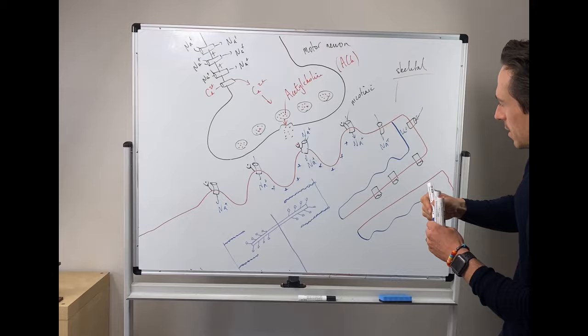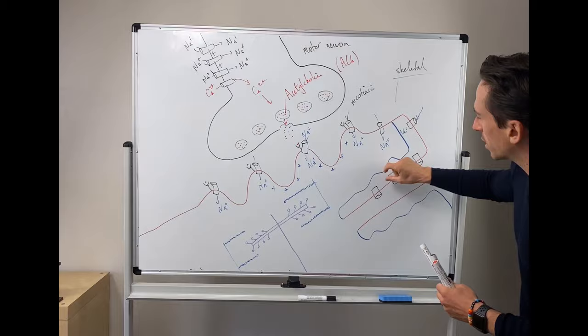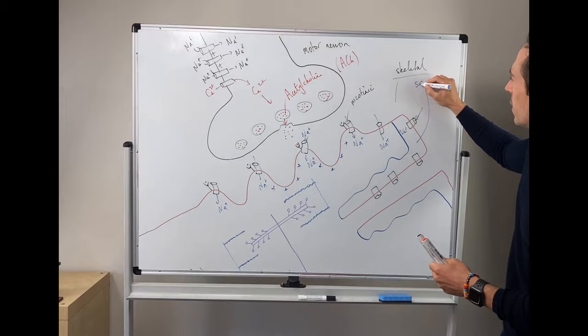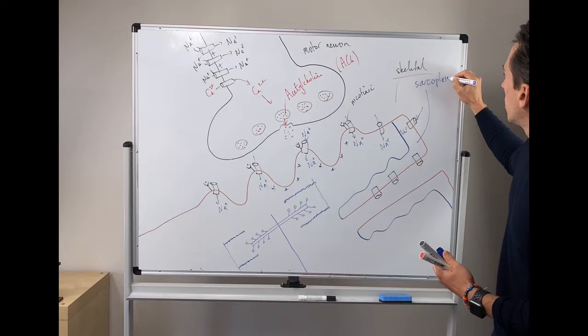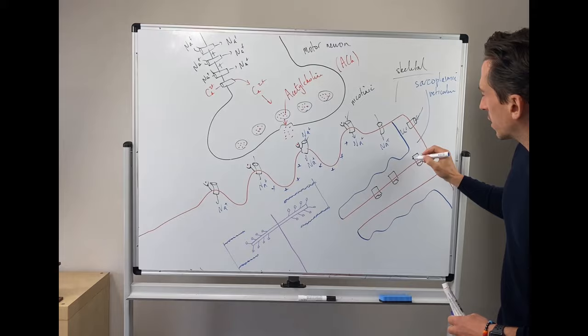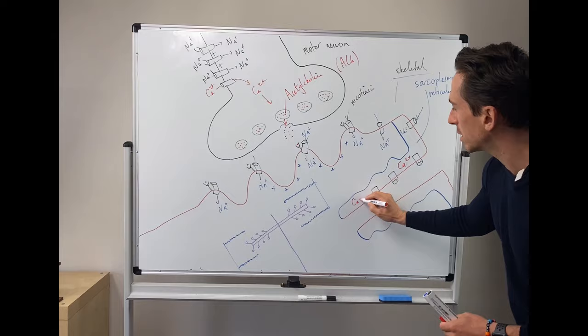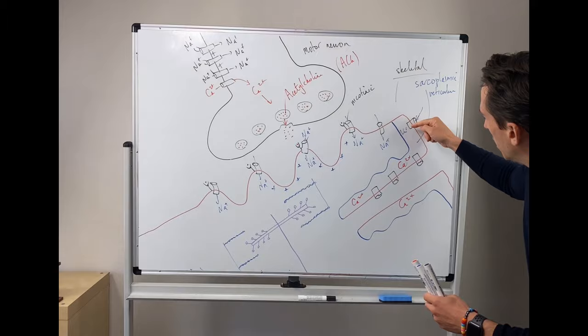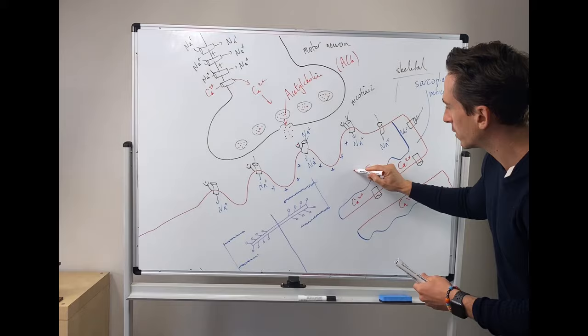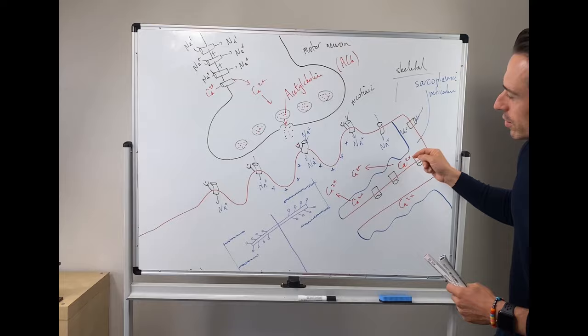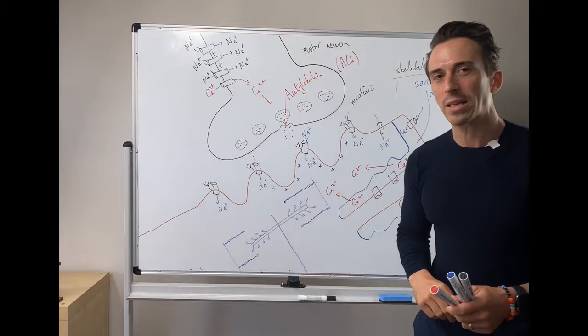As the membrane depolarizes, there's a structure called the sarcoplasmic reticulum — basically the endoplasmic reticulum of skeletal muscle. All you really need to know is it contains calcium. In skeletal muscle, calcium is stored in the sarcoplasmic reticulum. When the sodium comes in and depolarizes the membrane, this triggers the sarcoplasmic reticulum to release calcium. So now we've got all this calcium released deep inside the muscle cell, and calcium is the key that allows muscle to contract.